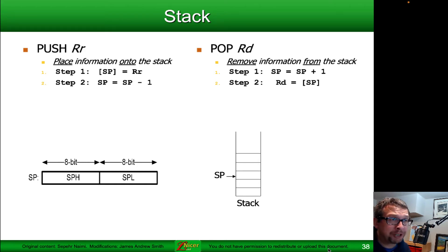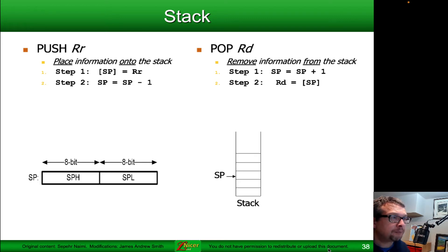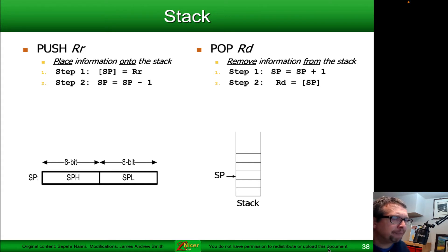Popping information from the stack means that first we increment the value of the stack pointer, so we point to a new location that's more positive in the stack itself. Then we take the contents pointed to by that stack pointer and we make a copy of it and place it in the register we're interested in. In all cases, we are only making copies — a copy from a register into the stack, that's a push, or a copy from the stack into a register. The information is never erased directly; because the stack pointer moves, it's sort of like you're erasing it after you pop it off the stack.